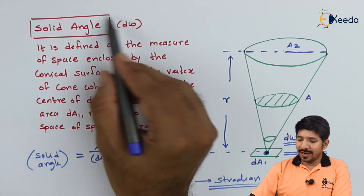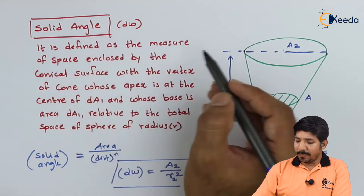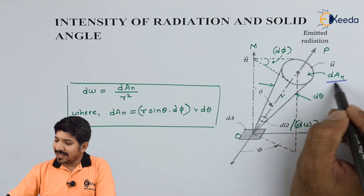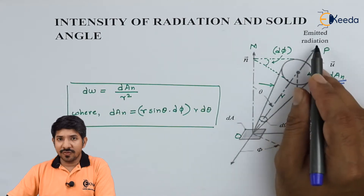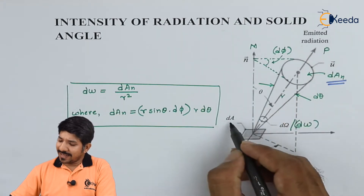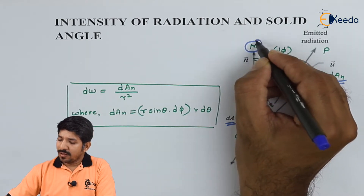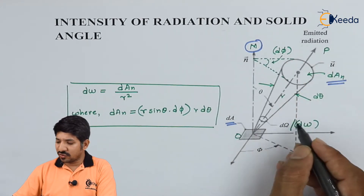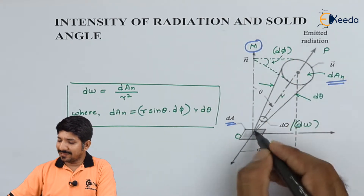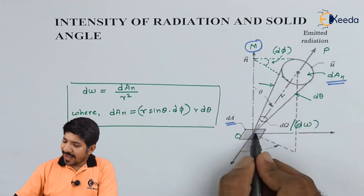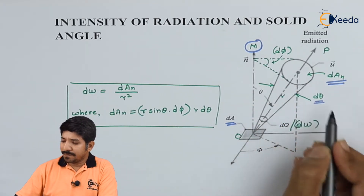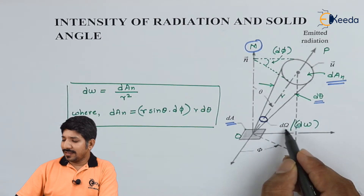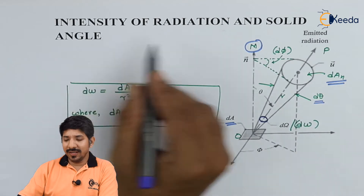Now let us talk about the implication of solid angle. Consider a small elemental area dA — this area is normal to the direction of emitted radiation. The area dA seen from point P looks like dA times cos(θ), where θ is the angle between the two lines. The angle subtended by the cone is dθ, and this space can be expressed as dΩ, which indicates your solid angle.